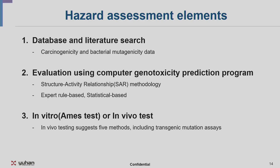The hazard assessment element involves three things. First, database and literature search for carcinogenicity and bacterial mutagenicity data. Second, computational genotoxicity prediction programs can be used to assess structural activity relationships, including expert rule-based and statistical-based approaches. Third, in vitro or in vivo testing — in vivo testing suggests five methods including transgenic mutation assays.